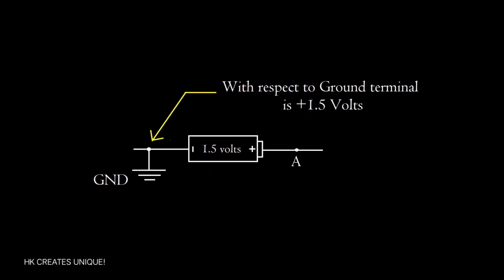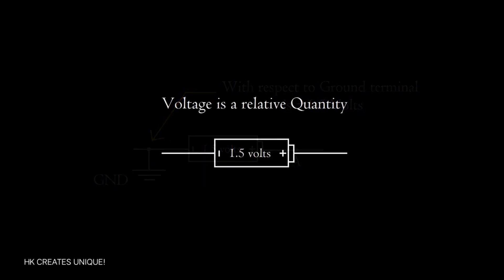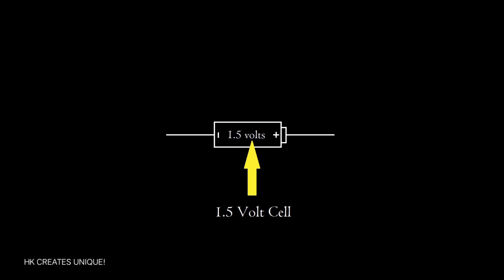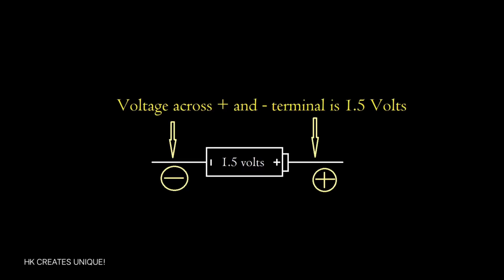Voltage is a relative quantity. In this cell it says that it is a 1.5 volt cell. What it actually is saying is that voltage across positive and negative terminal is 1.5 volts.